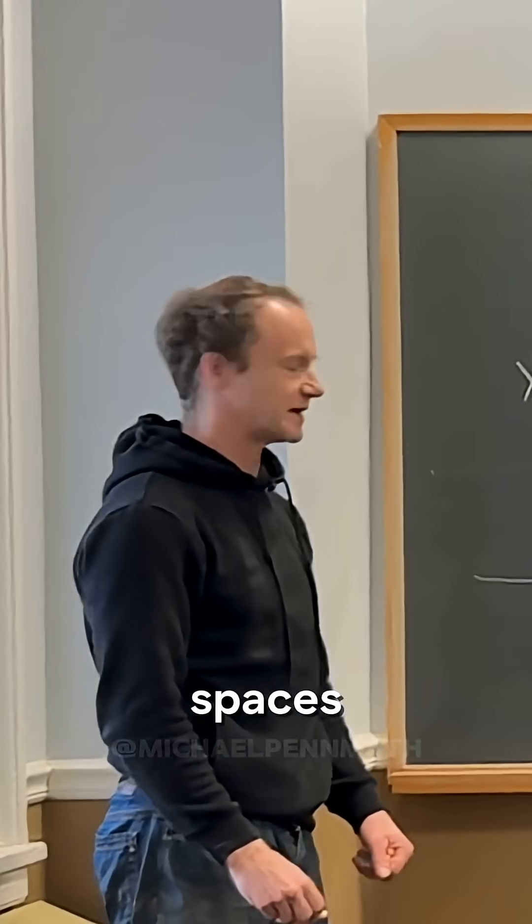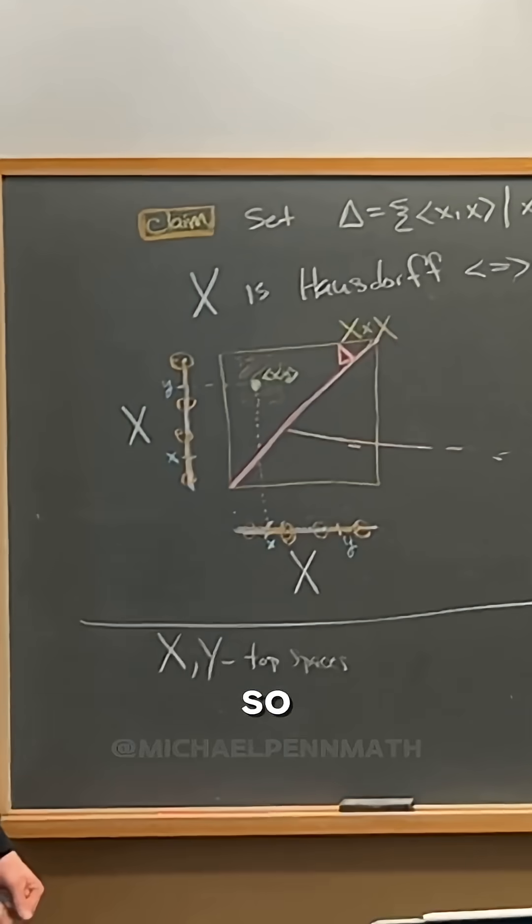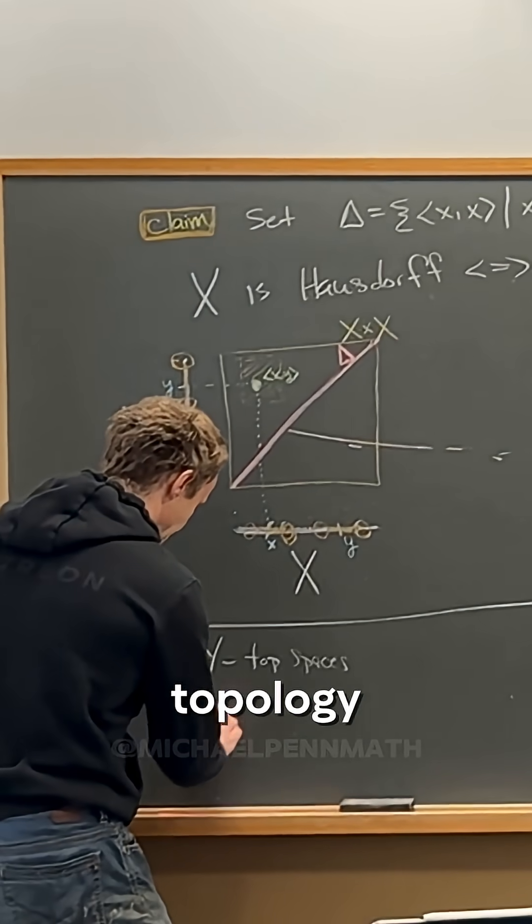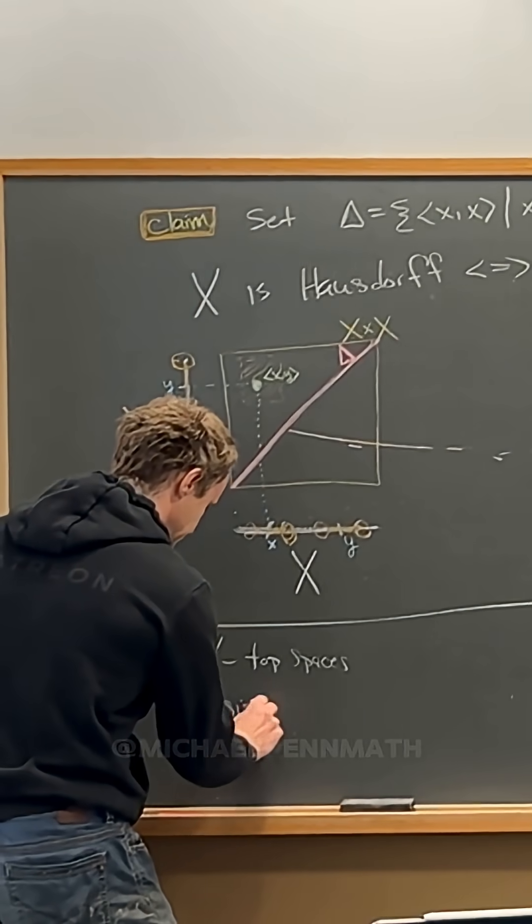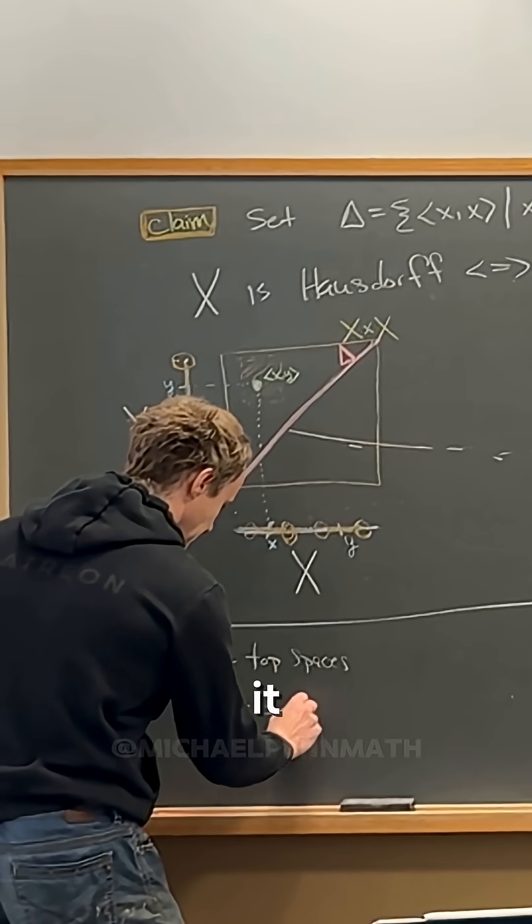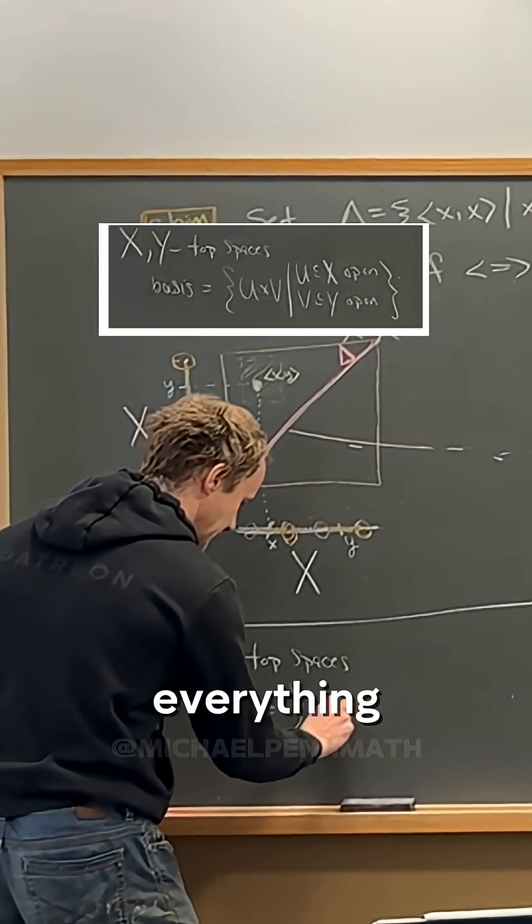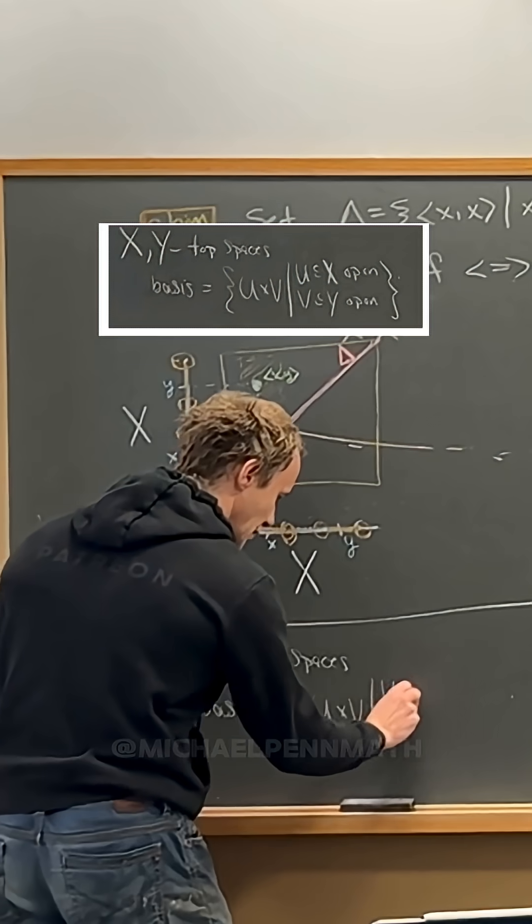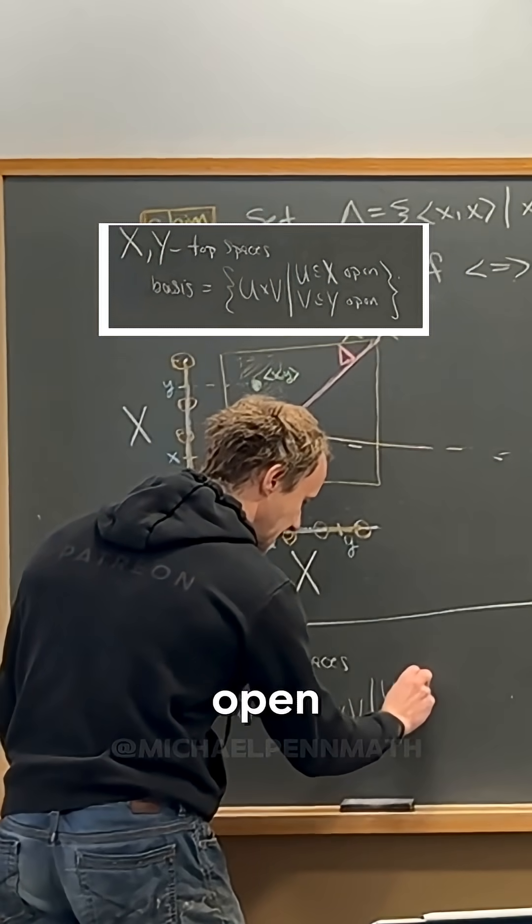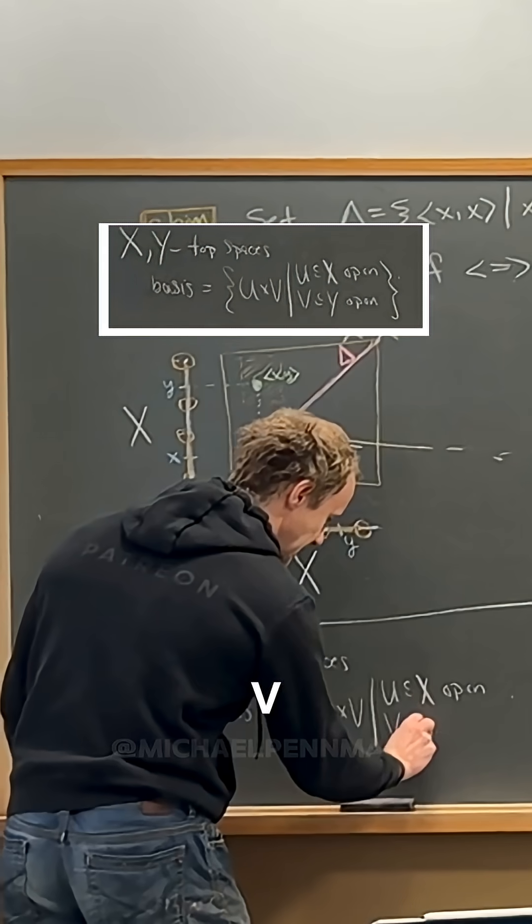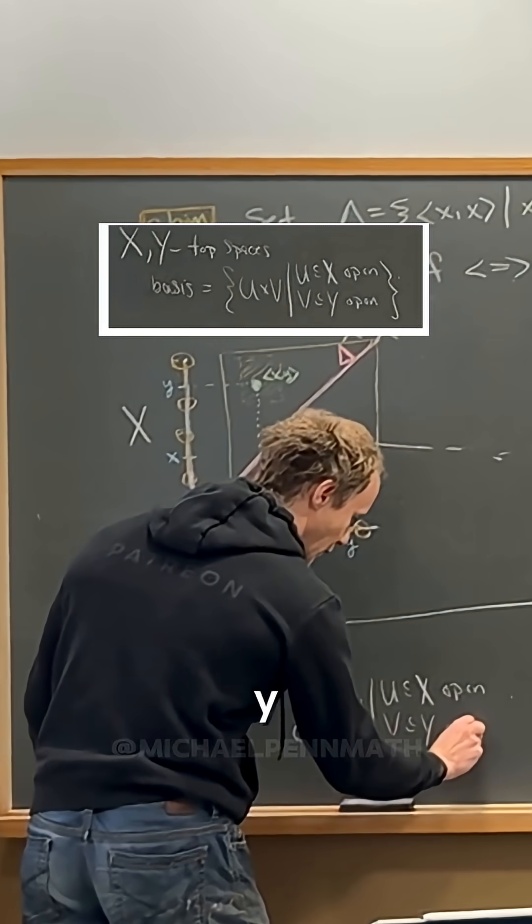So let's say X and Y are topological spaces. So the product topology has the following basis: it has basis everything of the form U cross V where U is open in X and V is open in Y.